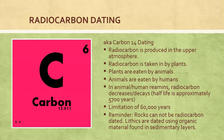Radiocarbon dating can also be known as carbon-14 dating. But how does radiocarbon dating work? Radiocarbon is produced in the upper atmosphere and is then taken in by plants through photosynthesis. These plants are eaten by animals, and animals are eaten by humans. In animal and human remains, the radiocarbon decreases — this is called decay — and it has a half-life of approximately 5,700 years, meaning for each half-life it's an additional 5,700 years.